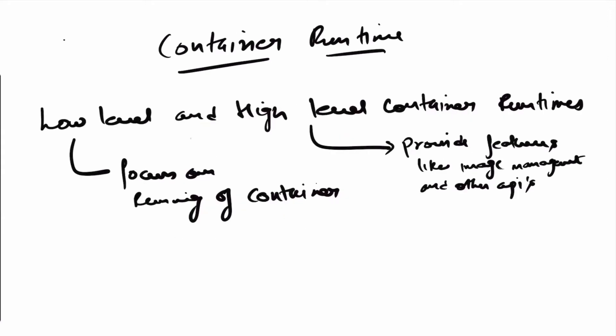Container runtimes are divided into two categories: low-level and high-level. Low-level container runtimes focus on the actual running of containers, something like runC. High-level container runtimes provide features like image management and other high-level APIs, something like containerD in Docker.